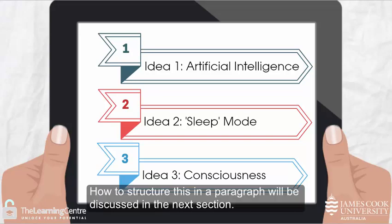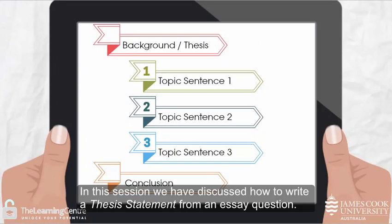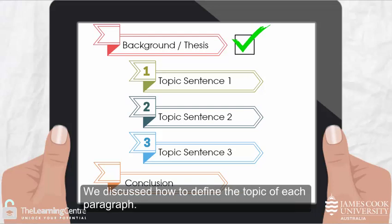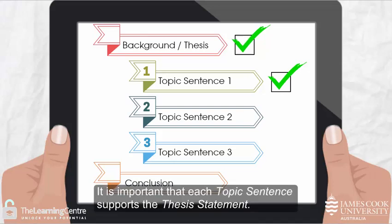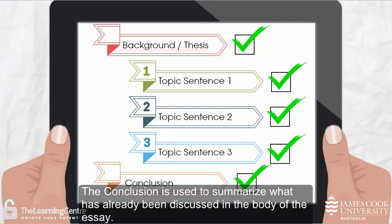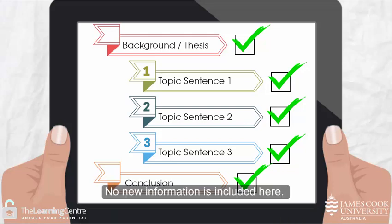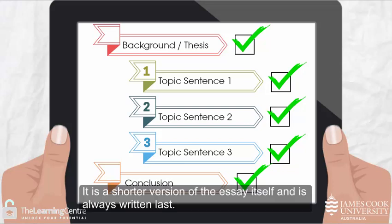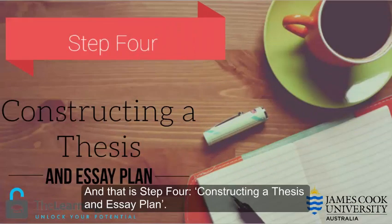How to structure this in a paragraph will be discussed in the next section. In this session we have discussed how to write a thesis statement from an essay question and how to define the topic of each paragraph. It is important that each topic sentence supports a thesis statement. The conclusion is used to summarize what has already been discussed in the body of the essay — no new information is included. It is a shorter version of the essay itself and is always written last. And that is step four: constructing a thesis and essay plan.